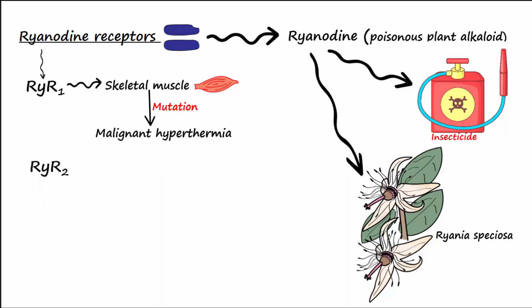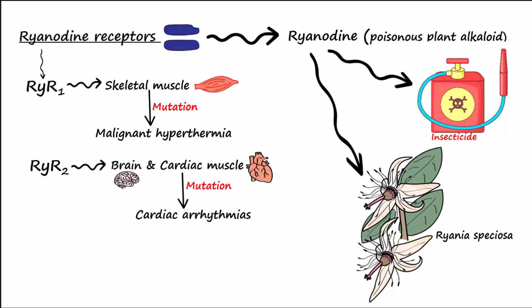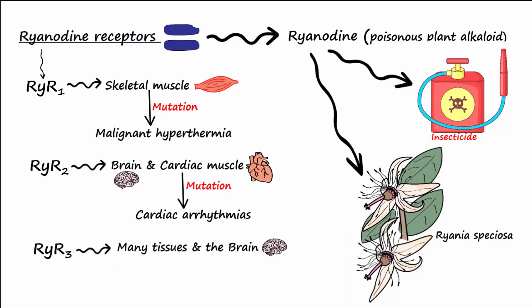RYR2 is the main isoform in the brain and cardiac muscle. Mutations in this receptor lead to cardiac arrhythmias. RYR3 is expressed more widely in many tissues, including the brain. Alzheimer patients have been shown to express higher levels of RYR3.